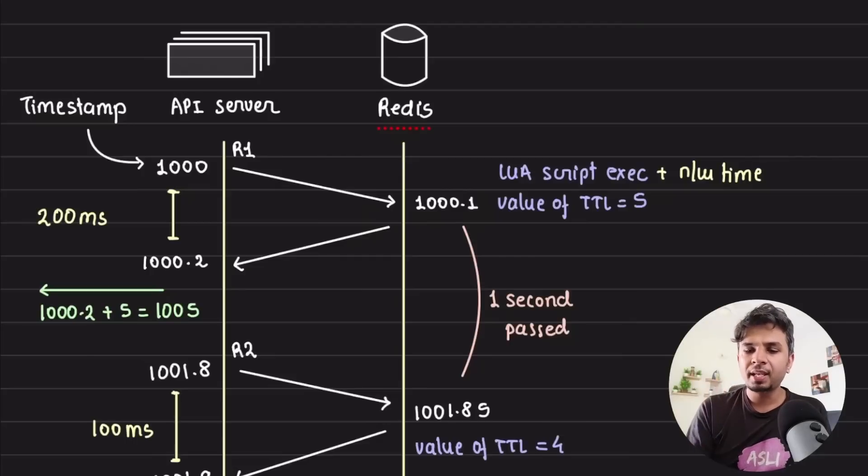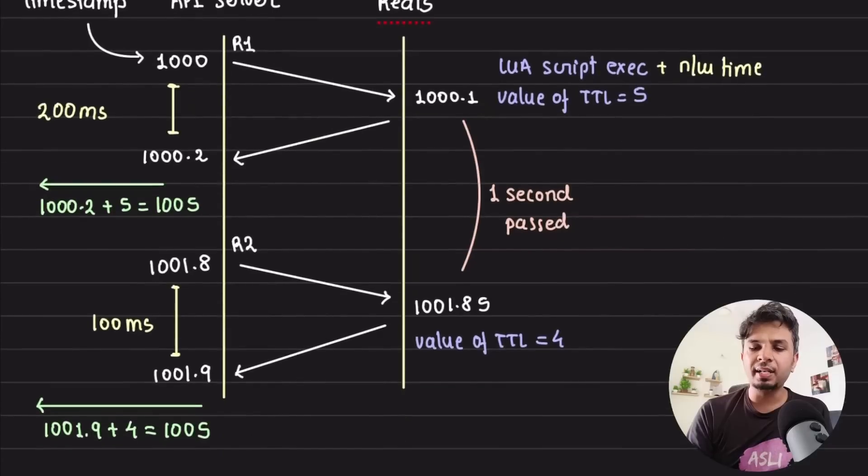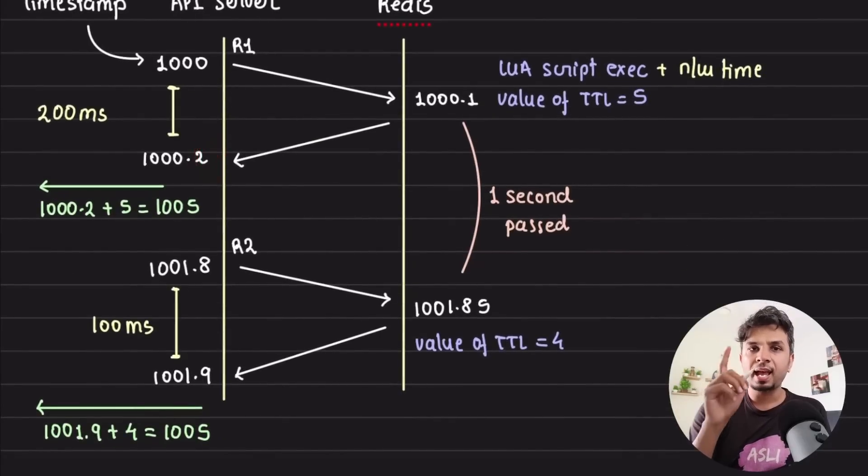So at that time instant, my key would be set with a TTL of five seconds. And when my API server receives the response from Redis, 200 total milliseconds have passed, and what I am doing is when it reaches back to the API server, I am responding with the TTL that I am getting in response. So I would get five in response. So 1000 is my current timestamp. 1000.2 plus five, then it is basically converted to integer, and what you respond is 1005 to your user.